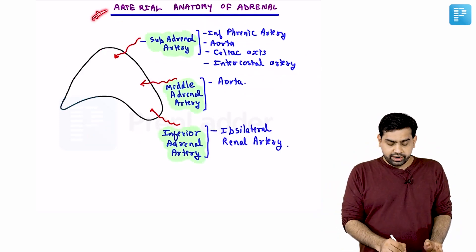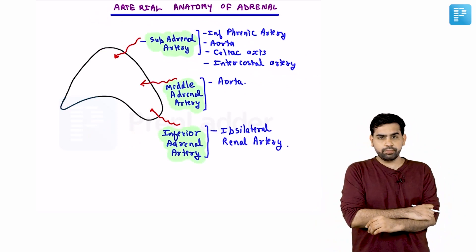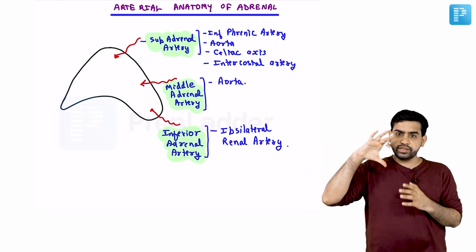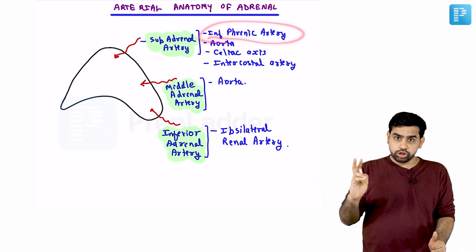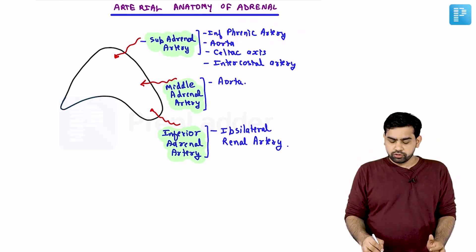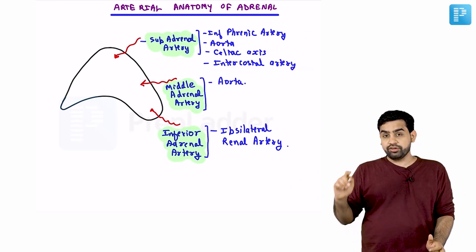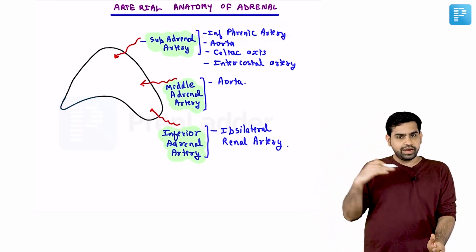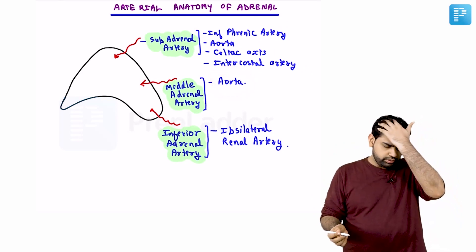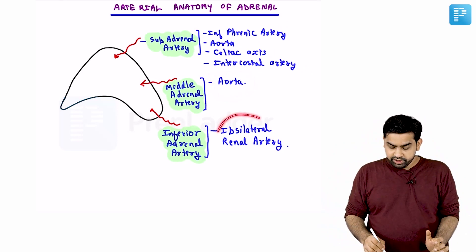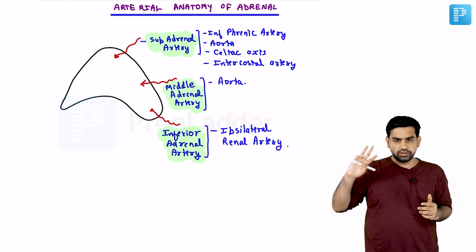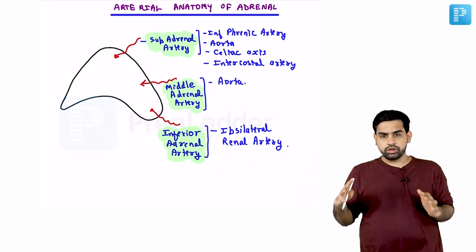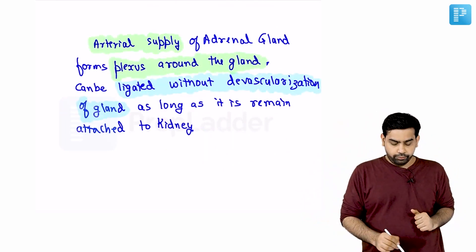The adrenal glands are supplied by three arteries: the superior adrenal artery, the middle adrenal artery, and the inferior adrenal artery. The superior adrenal artery is most commonly a branch of the inferior phrenic artery, but it can also arise from the aorta, celiac axis, or intercostal artery. The middle adrenal artery is most often a direct branch of the aorta. The inferior adrenal artery is a branch of the renal artery.